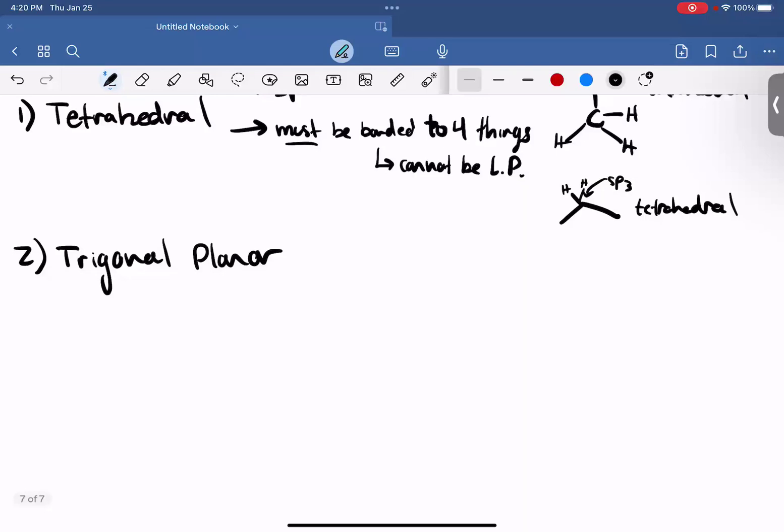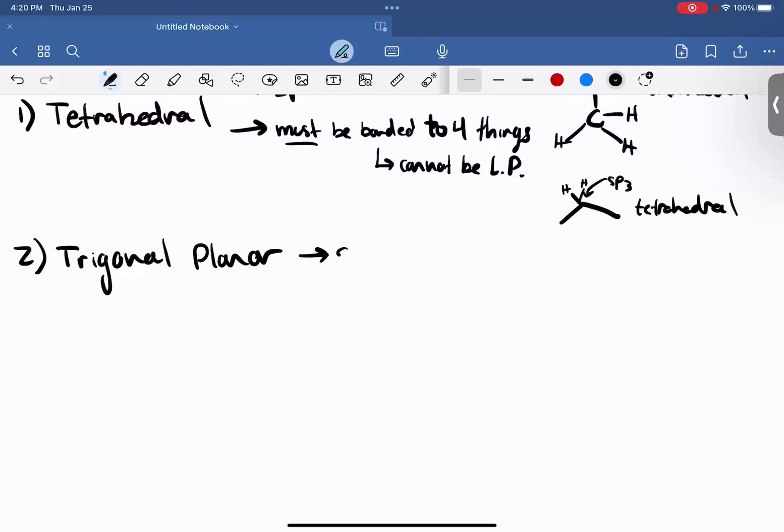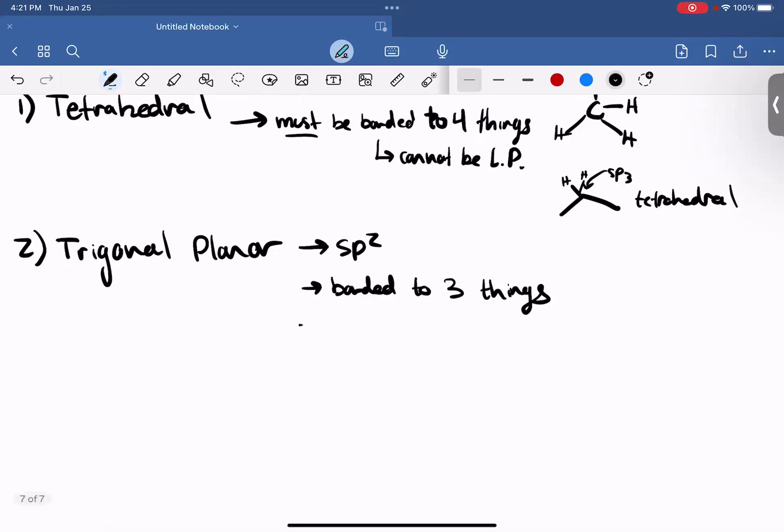Now let's look at trigonal planar. Trigonal planar is going to be SP2 hybridized and bonded to three things. And this also cannot have lone pairs.